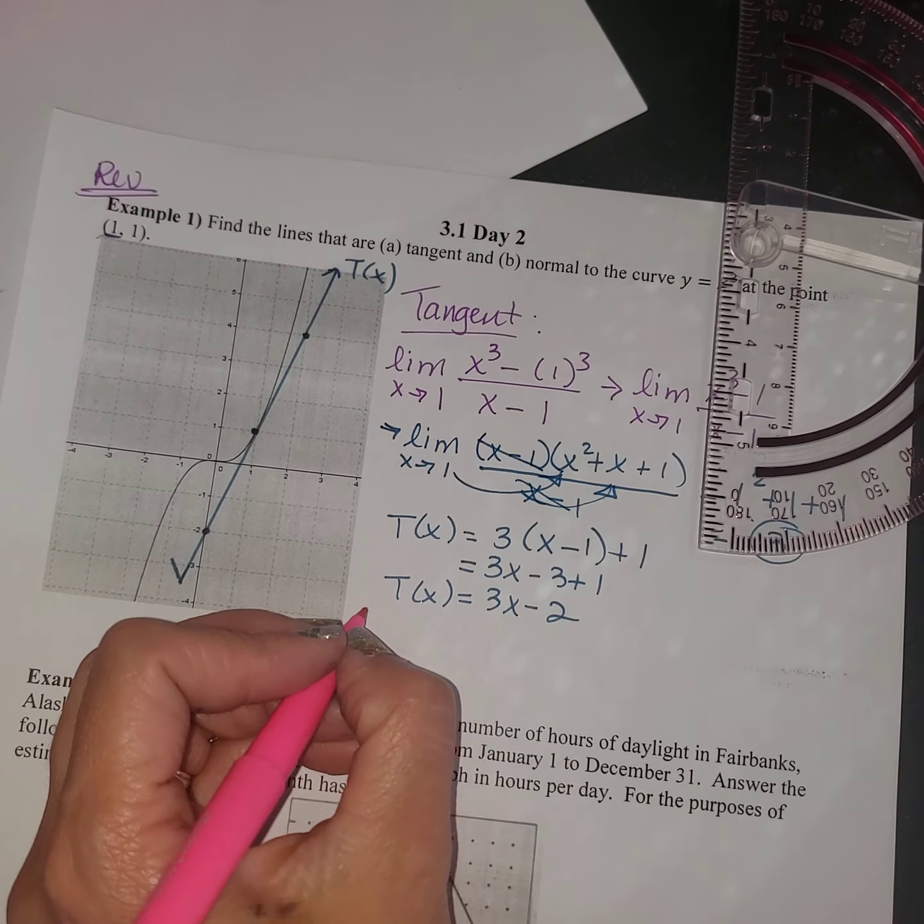All right, example two. So it says, the viewing window below shows the number of hours of daylight in Fairbanks, Alaska. Number of hours in Fairbanks, Alaska. So the hours in a day, on a typical day. So there's 24 hours in a day, and there's only 8 lines there. So we're probably counting by threes.